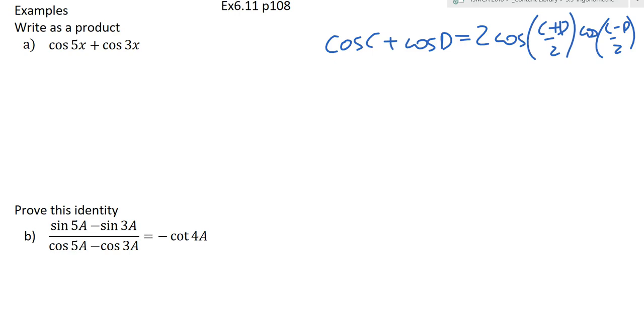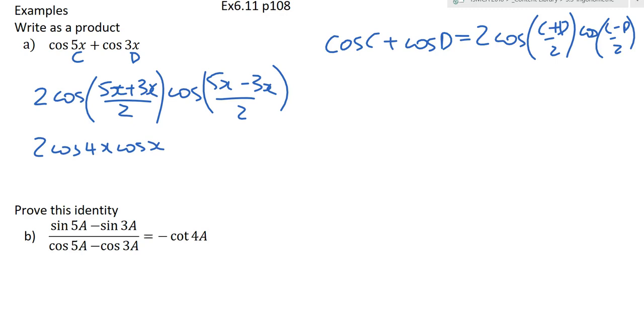And hopefully this makes sense from there. So, if that's c and that's d, we're just going 2 cos(5x plus 3x over 2) cos(5x minus 3x over 2). So that is simply 2 cos 4x cos x. And that's it as a product.